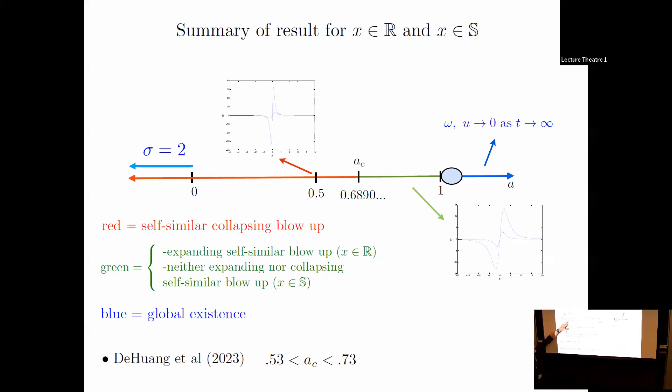When sigma is two, the biggest dissipation we tried, this changes from collapse to global existence, but only at sigma equals two—below that it's still collapse. This special point in the periodic problem belongs in the blue region; on the real line it's in the green region, expanding blowup. So there's a difference between periodic and real line. This blue bubble means our numerical evidence for global existence isn't as strong, but we think it's global existence. Most interestingly, we find a critical value where you change from collapse to expanding blowup, computed to 14 digits. We have no theoretical explanation yet.